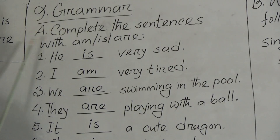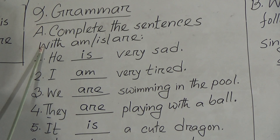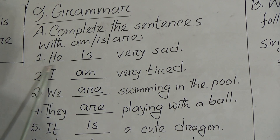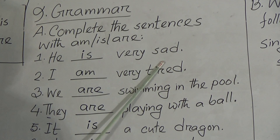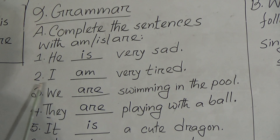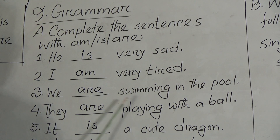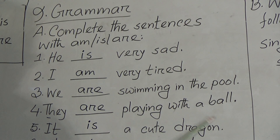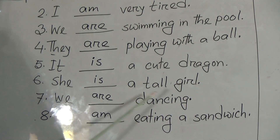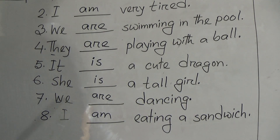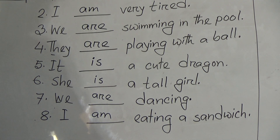Now in Grammar A, complete the sentences with am, is, or are: Number 1, he is very sad. Number 2, I am very tired. Number 3, we are swimming in the pool. Number 4, they are playing with a ball. Number 5, it is a cute dragon. Number 6, she is a tall girl. Number 7, we are dancing. Number 8, I am eating a sandwich.